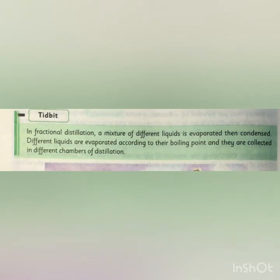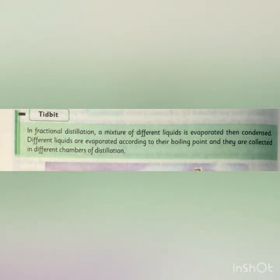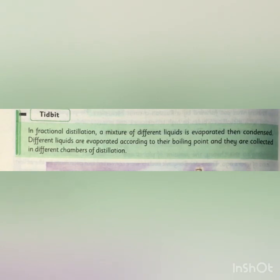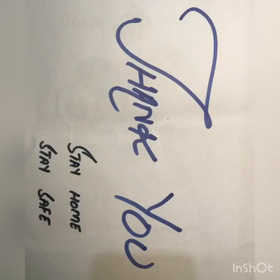A quick tidbit: in fractional distillation, a mixture of different liquids is evaporated and then condensed. Different liquids are evaporated according to their boiling points and collected in different chambers of the distillation column, then used for different purposes. Thank you students — this is the end of part 5. I hope you understand all the topics very well. Stay home, stay safe.